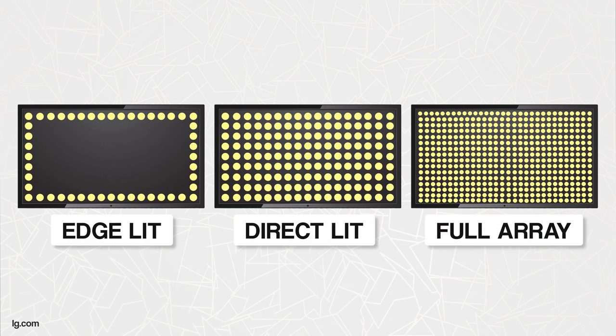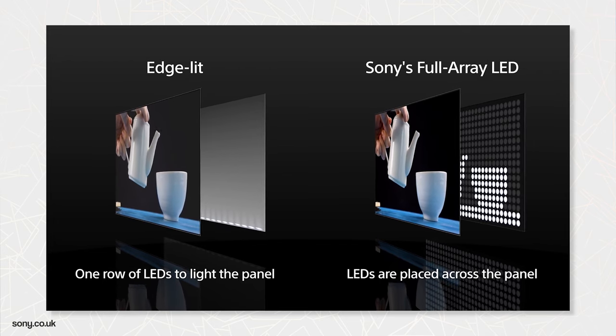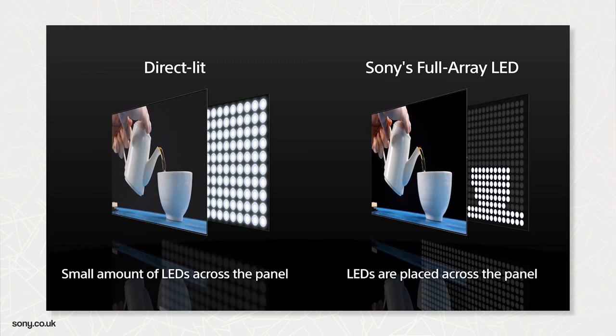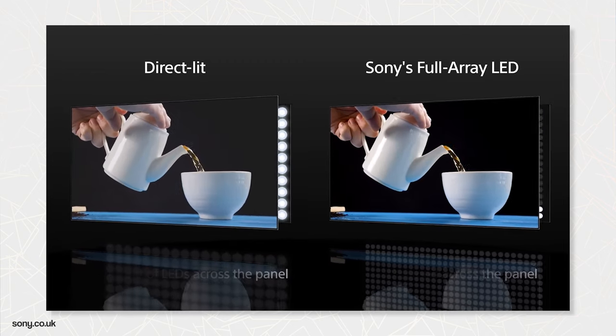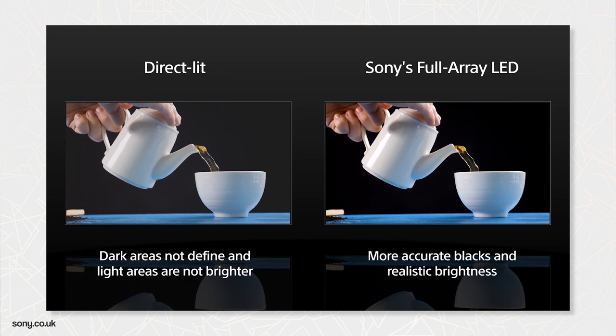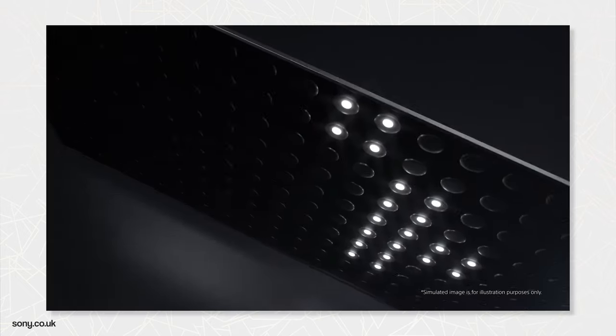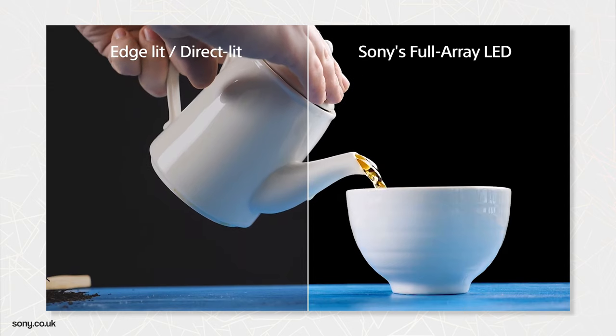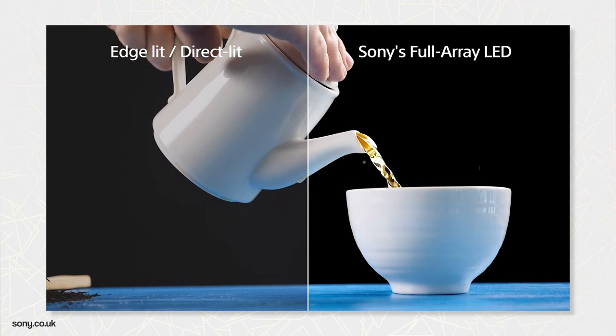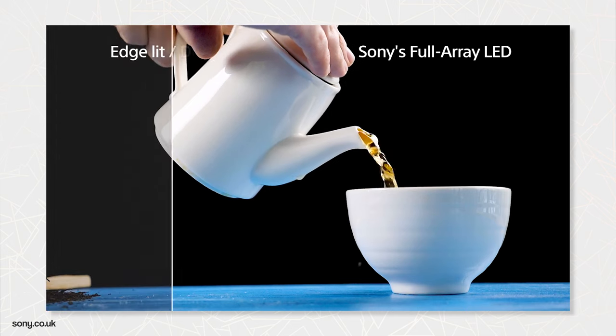You can also get direct lit models, which work very similarly to full arrays with LEDs across the whole panel. But these models don't use local dimming and therefore won't offer the same level of performance. To step it up, you'll want a full array LED display, which has LEDs across the back of the whole screen, controlled more precisely to ensure the darker parts stay dark and the lighter parts stay light. These LEDs are found in zones which can be individually dimmed with local dimming to enhance contrast and picture quality. The more local dimming zones a TV has, the better the contrast and image will be. Full array TVs can get brighter than edge lit models and are much better at handling local dimming for better contrast, deeper blacks and less of that blooming effect.